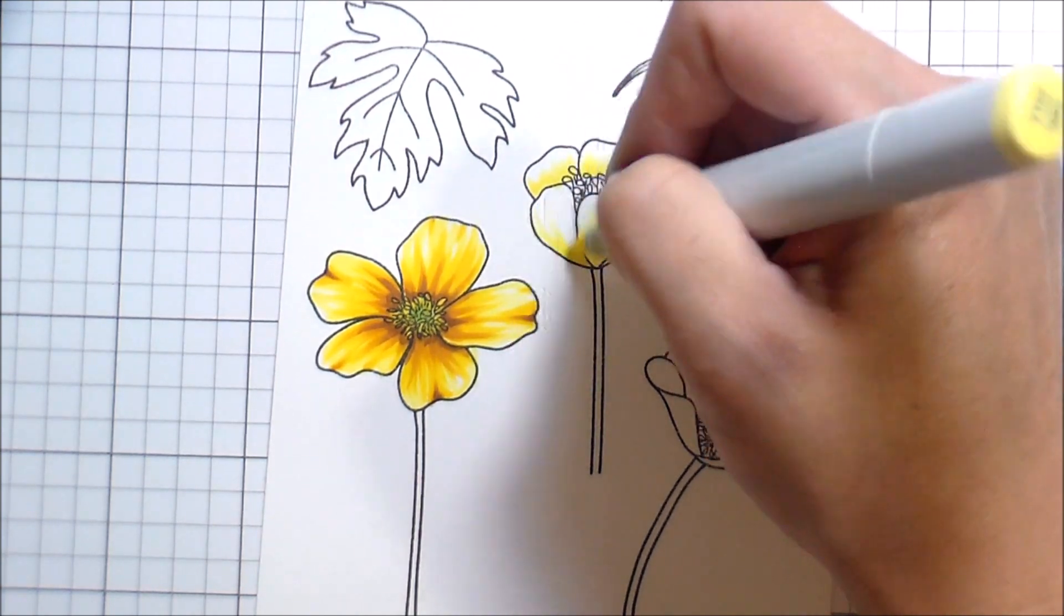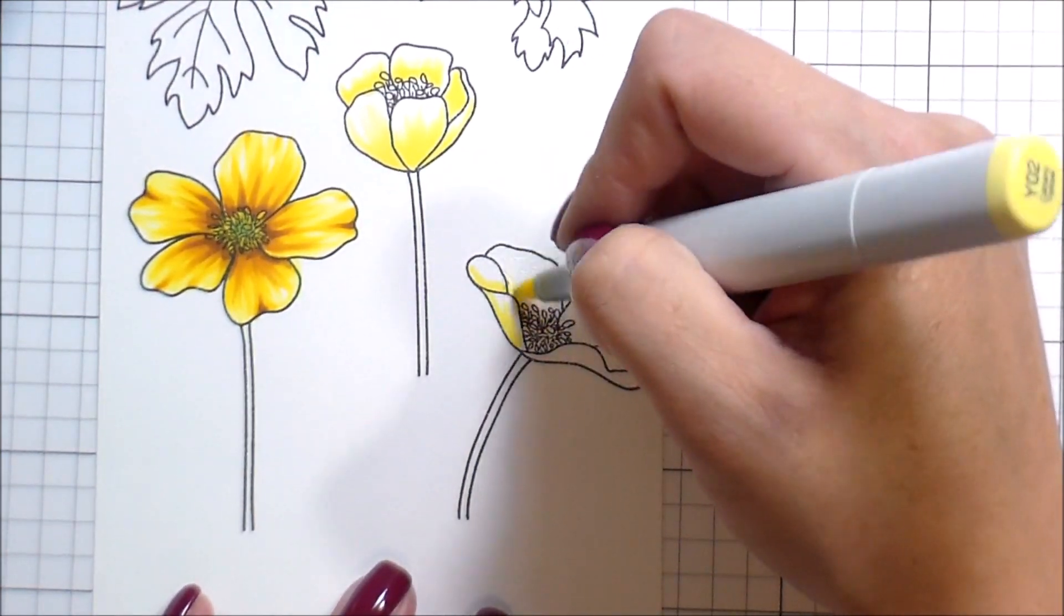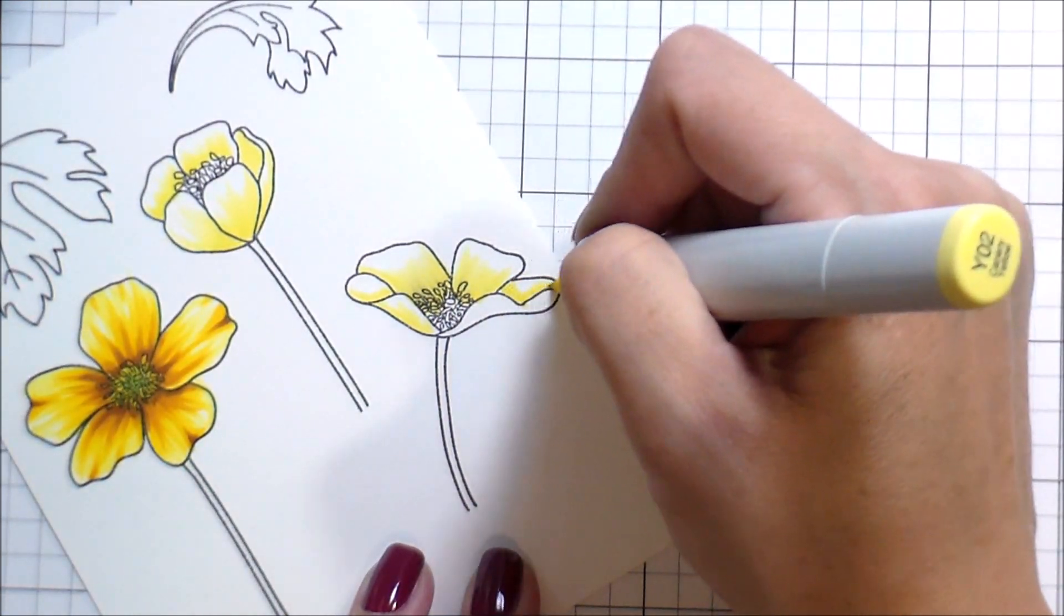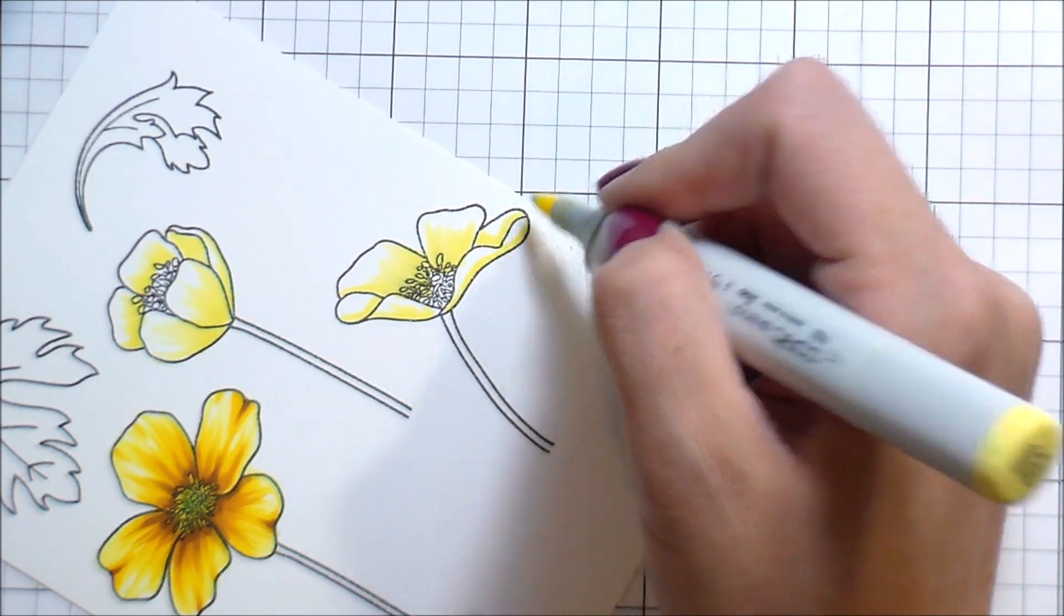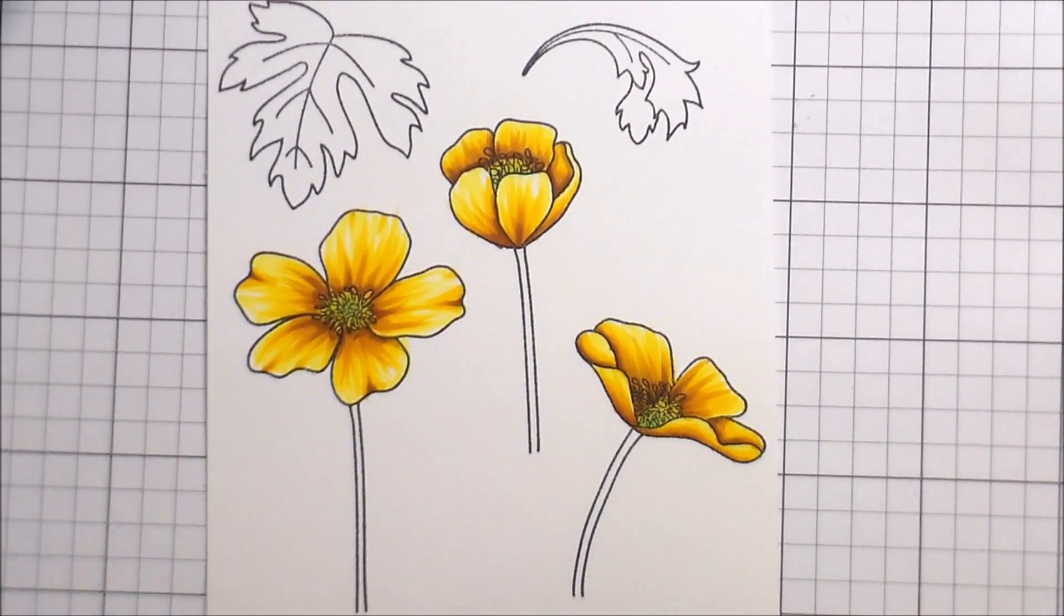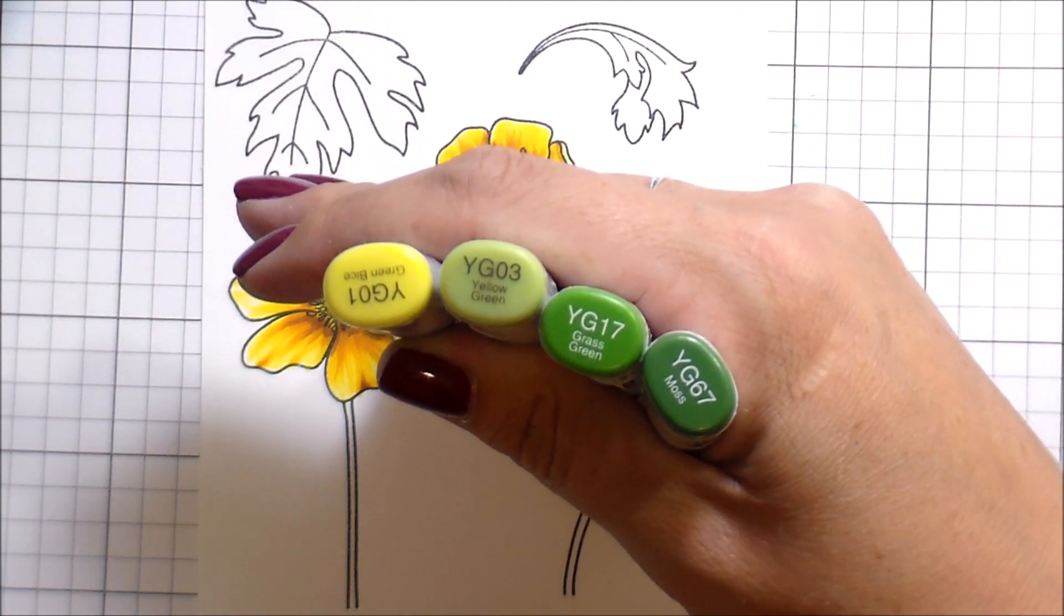For the lightest color I'm just very quickly using the tip of the marker to swipe over, not blanket filling it in like I am with the center. To differentiate the center from the rest of the flower I'm bringing in YG03 and adding a little bit of green so the center is set apart. For these other two flowers I'm just quickly going to show you where I would add the shading.